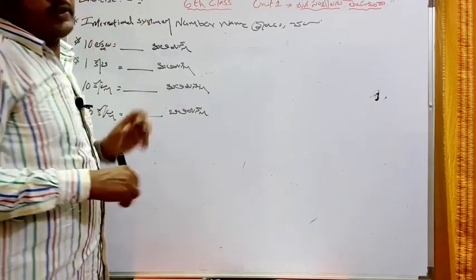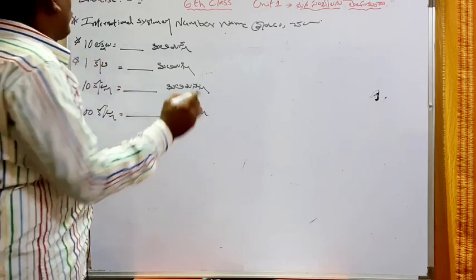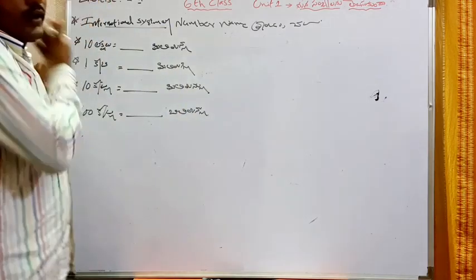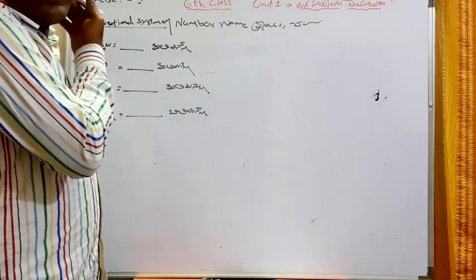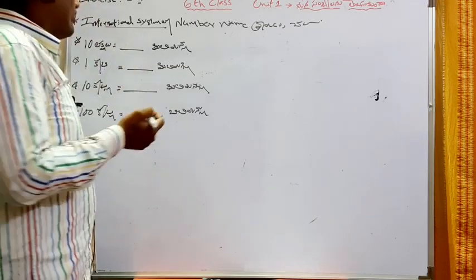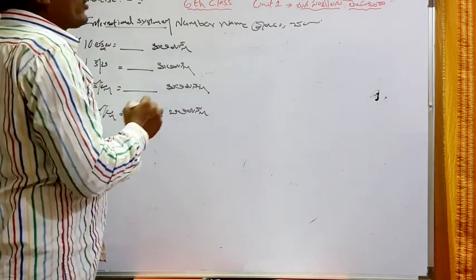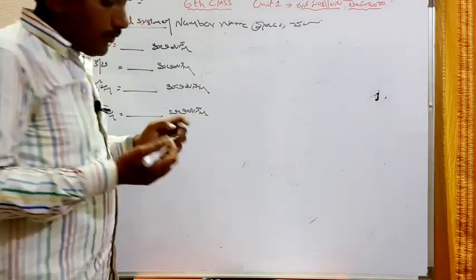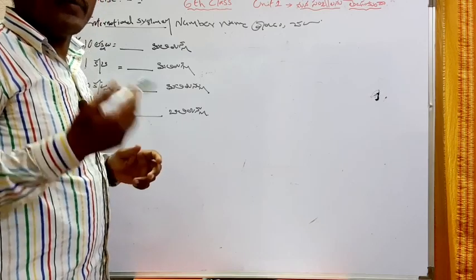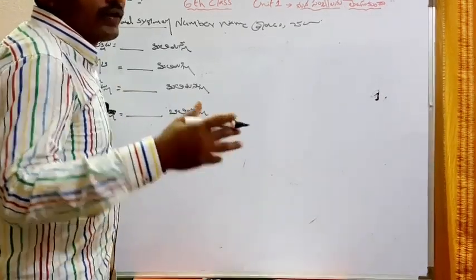What topics do we do in exercise 4? We have to read numbers in the international system. The interesting thing is called the English language. The British system is called this type of language. The internet system is named by the number of names. The place can be named by the internet system.